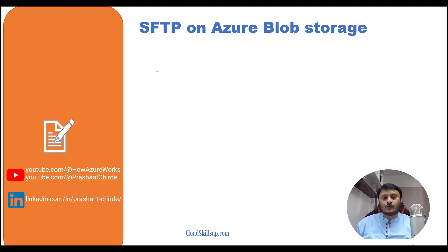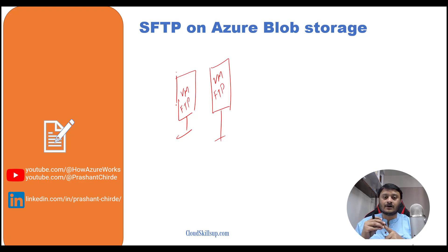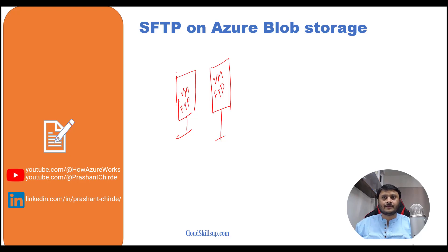The typical way if you want to run SFTP is to create VMs — maybe one or two depending on your requirement — and run FTP on those VMs. But once you go with this solution, there are things you need to take care of: the lifecycle management of the VMs, patching, creating users, and on top of that, if you want to scale it you have to do it yourself.